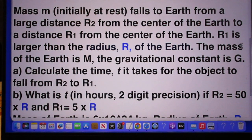Mass M initially at rest falls to earth from a large distance R2 from the center of the earth to a distance R1 from the center of the earth. R1 is larger than the radius R of the earth. The mass of the earth is capital M. The gravitational constant is capital G.